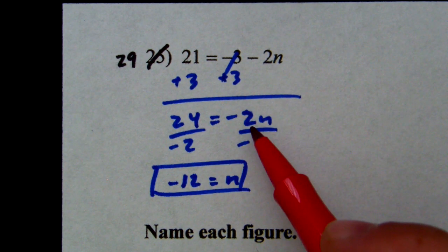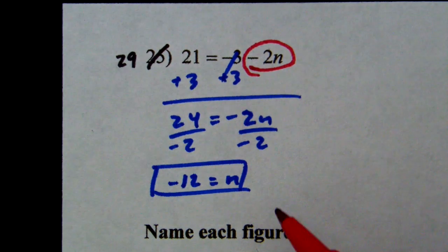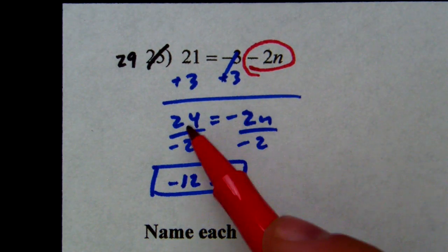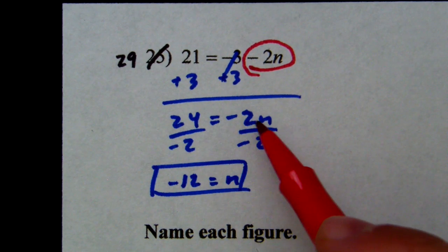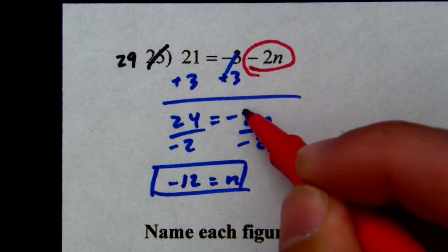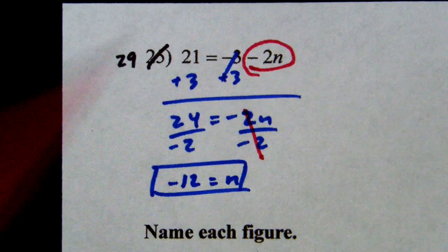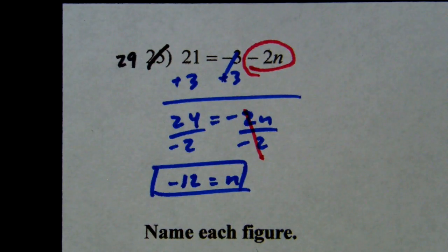The negative 2n — make sure you drop down the sign as well, just like this. 24 equals negative 2n. We divide by negative 2: 24 divided by negative 2 gives n equals negative 12.